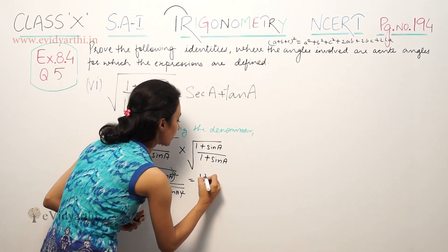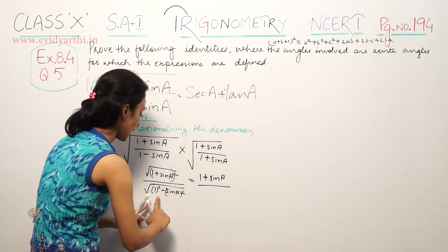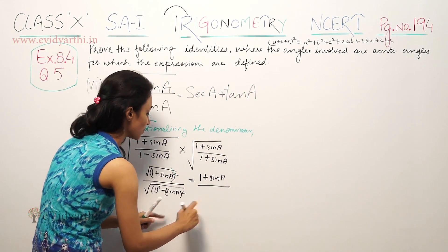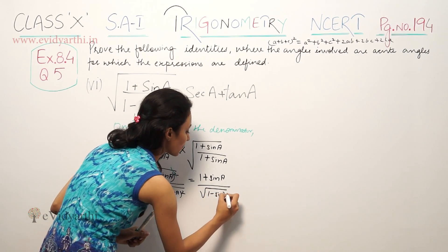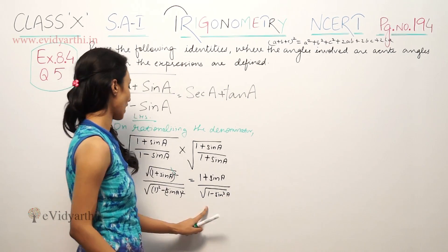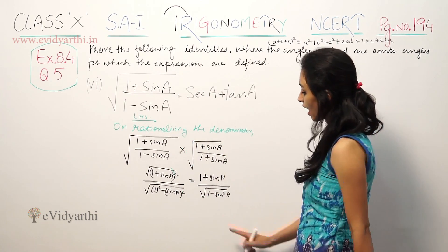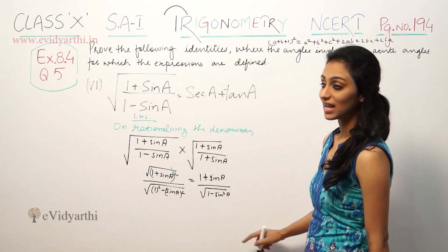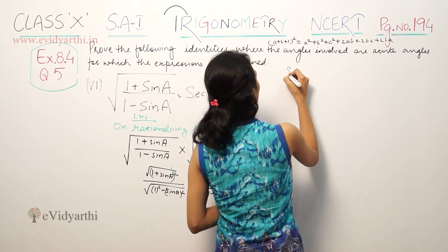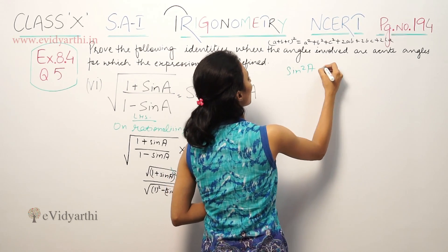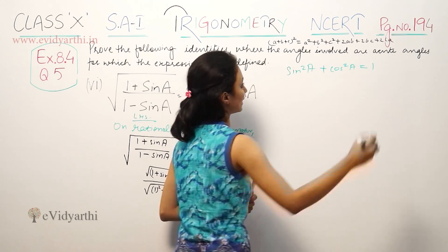So opening and validating: (1 plus sin A) upon under root of (1 minus sin squared A). Here, 1 squared is 1 and sin A squared gives us (1 minus sin squared A). Now, using the identity sin squared A plus cos squared A equals 1, we know that 1 minus sin squared A equals cos squared A.